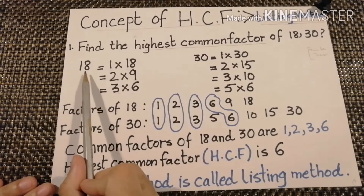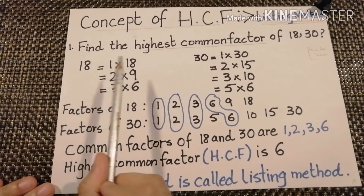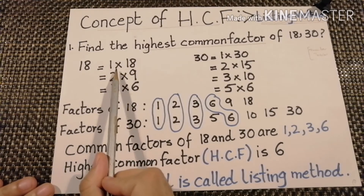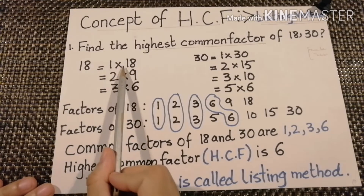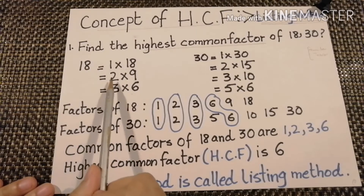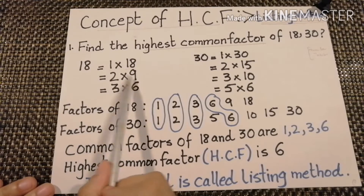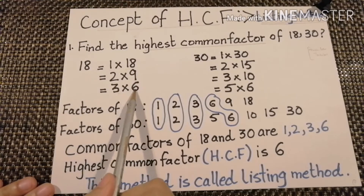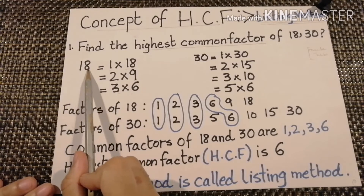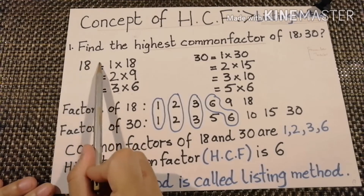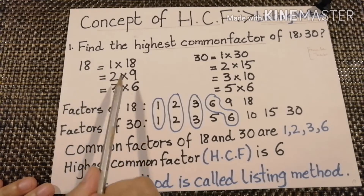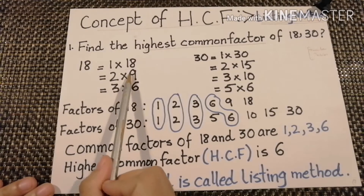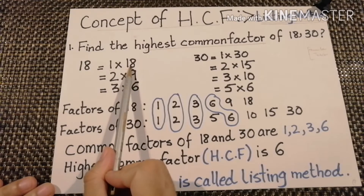Now, 18 equals: remember your tables — 1 times 18 is 18, 2 times 9 is 18, 3 times 6 is 18. So the factors of 18 are 1, 2, 3, 6, 9, and 18.